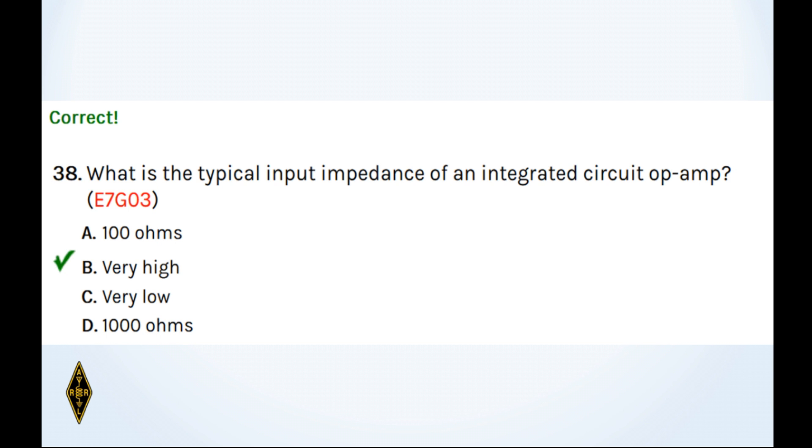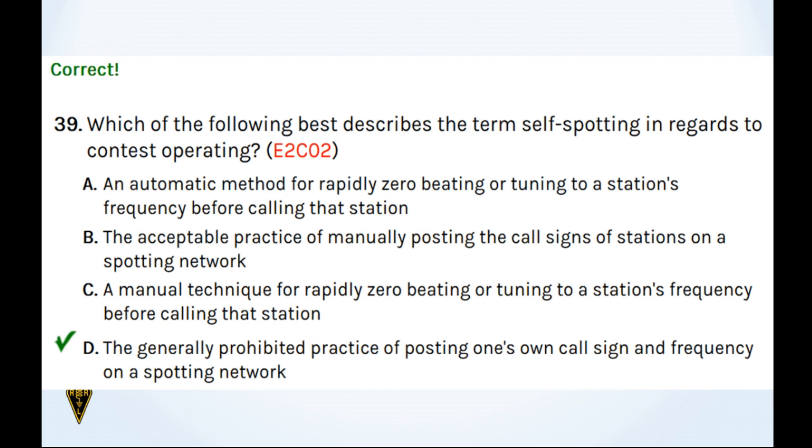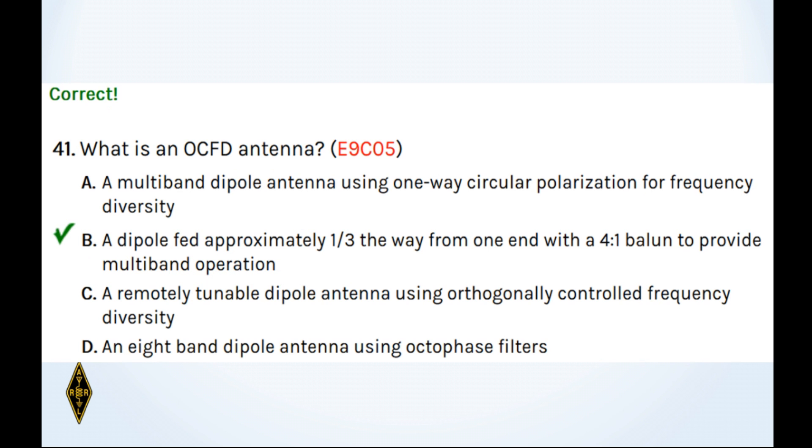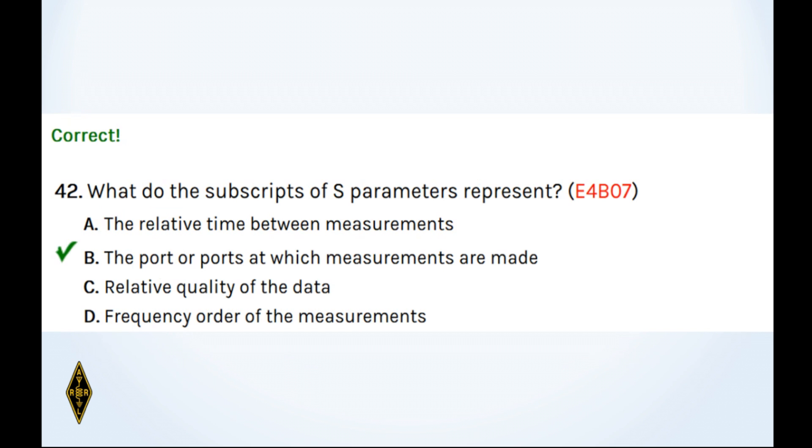And which of the following best describes the term self-spotting? It's a generally prohibited practice of posting your own call sign saying, I'm here. No, don't do that. And 40, which of the following is typically used to construct a mimic-based microwave amplifier? That's microstrip construction, maintaining constant impedance on the printed circuit board. And 41, an OCFD or off-center fed dipole antenna. It's a dipole fed approximately a third of the way from one end. And what do the subscripts of S-parameters, scattering parameters, represent? It represents the port or ports at which measurements are being made.